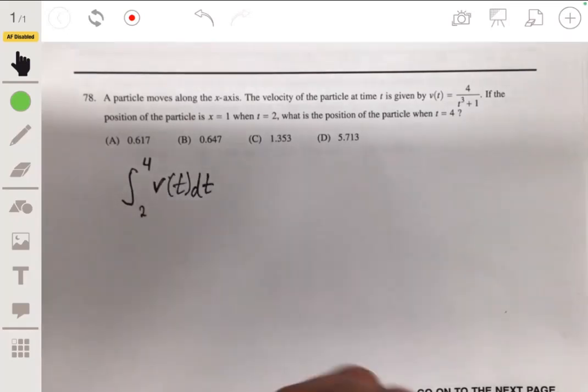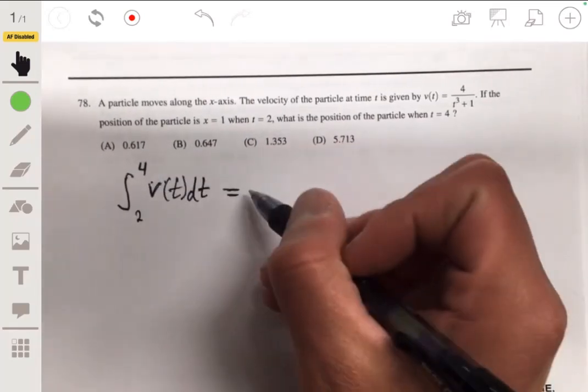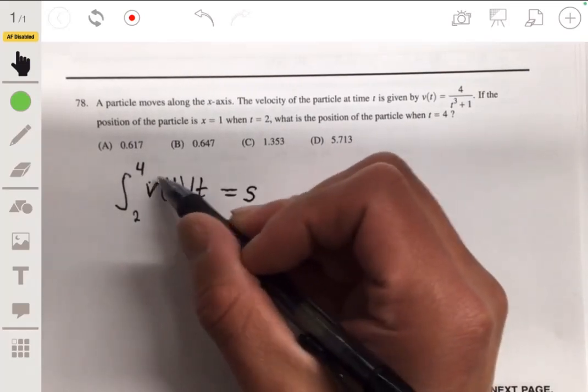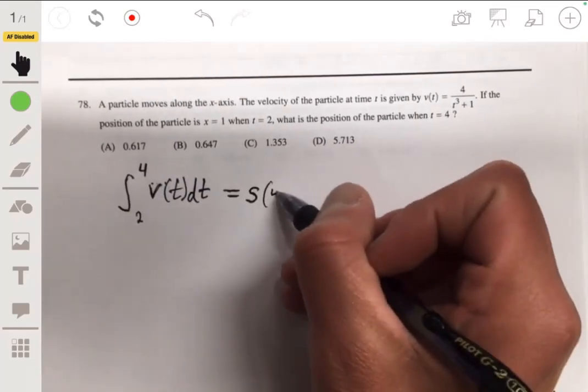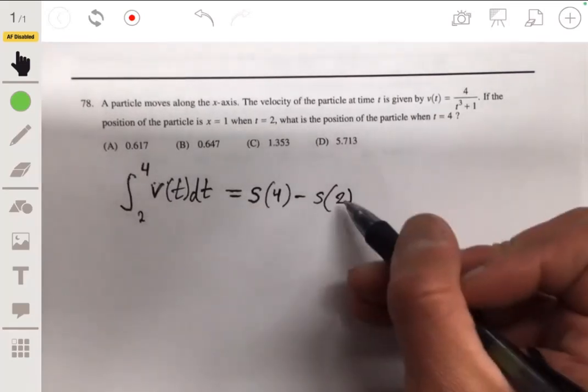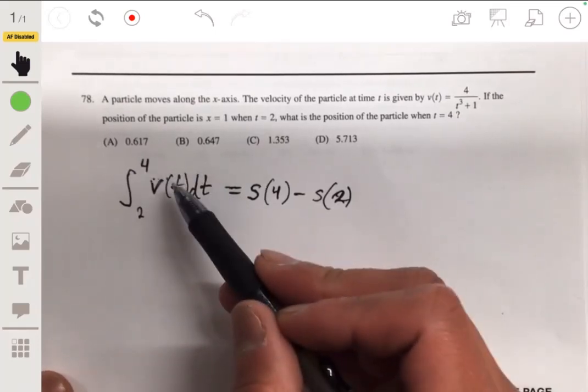Let me first map this out. So remember, this is going to be—v is the derivative of s, so when you integrate this you're finding the anti-derivative, so you're taking s of four minus s of two.